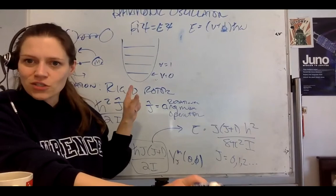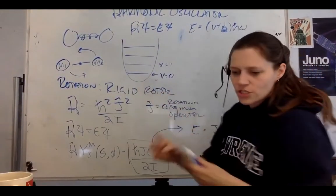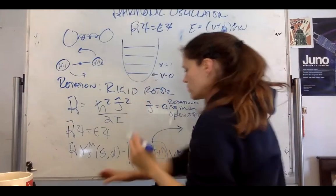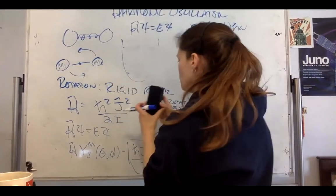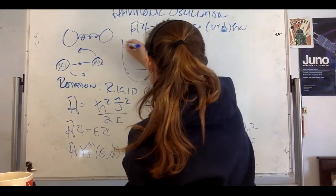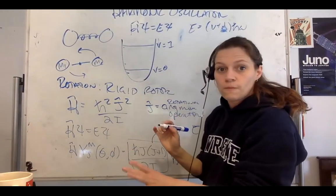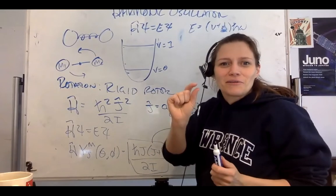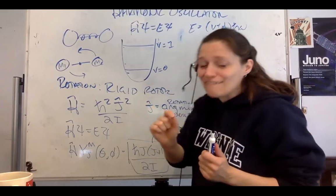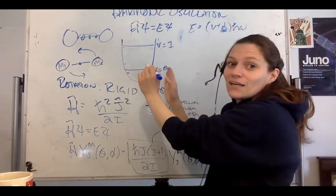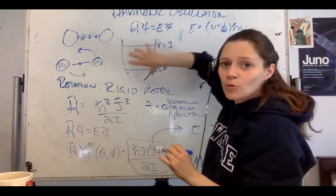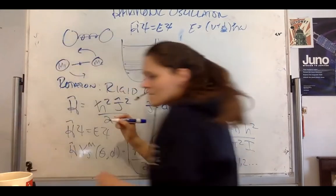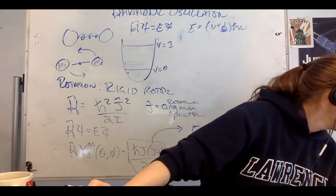Let me show you what this looks like on this plot. We've got v equals 0 to v equals 1. The rotational energies are teeny tiny. If I were to draw the energy states on top of the energy states for vibration, they'd be right here. There'd be like one here, one here, there, there, there. Actually, they would get farther and farther apart the higher up you go.